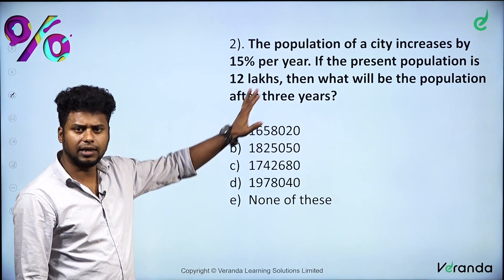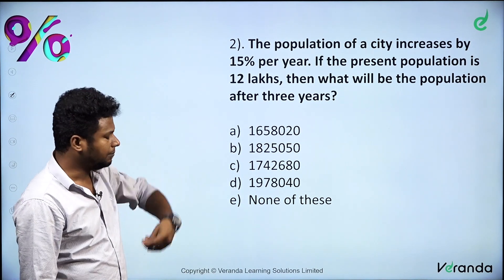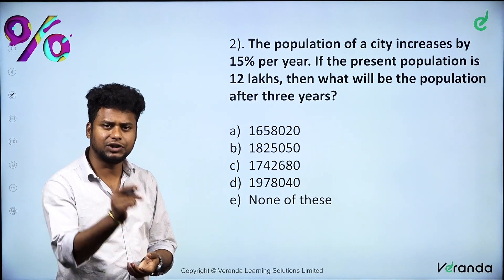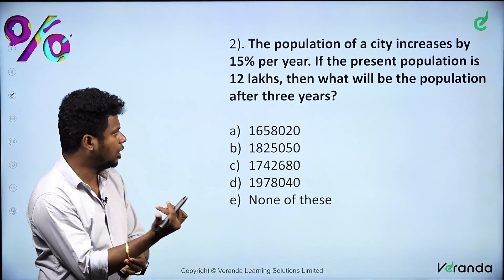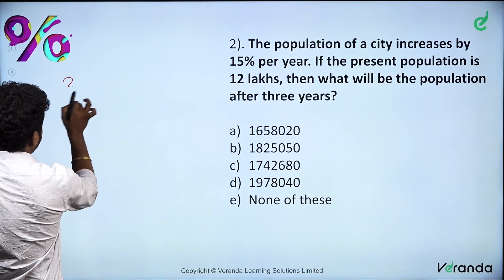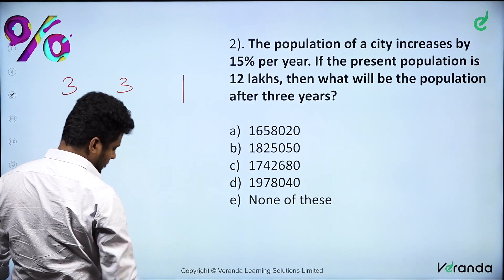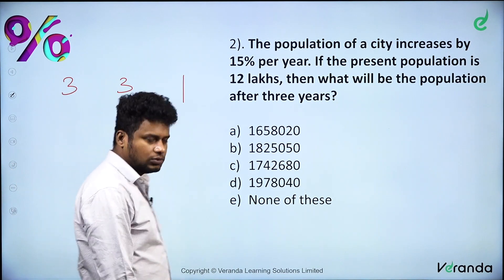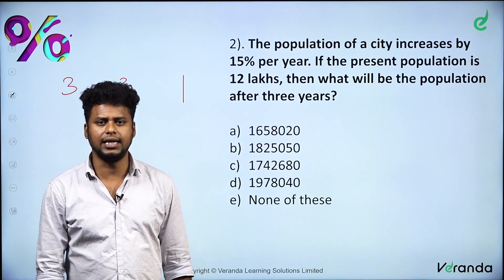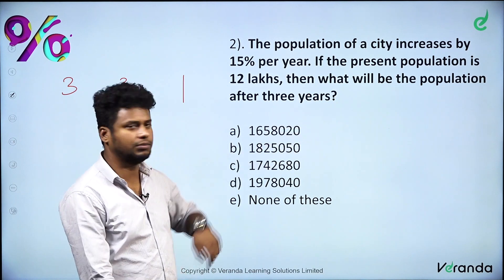Now, what do we do in the compound interest approach? We will use the 3-3-1 method. We will solve this. What is the difference? In the 12 lakhs with 15% rate, let's talk about how to apply this method.